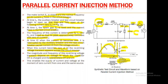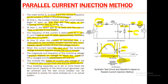The magnitude and frequency of this restriking voltage during the transient stage can be calculated from the values of CH and LH. This enables the supply of current and voltage at the moment of zero current from one and the same source. The breaking capacity of up to 10 or more times the short circuit capacity of the generator can be achieved, and the test circuit breaker can be subjected to exactly the same stress as in an actual system.